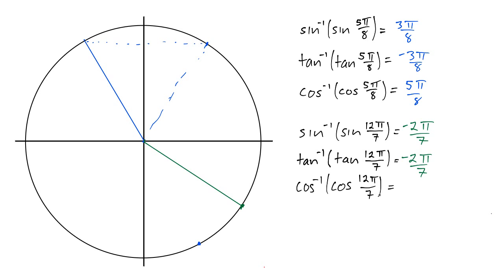But what about cosine inverse of cosine of 12π over 7? Here we do have to do something, we have to change the point because we're not in the first or second quadrant. How do we get to the right place? Well, we want to find a place on the unit circle that has the same x value. So let's go straight on up, and it must be right around there.